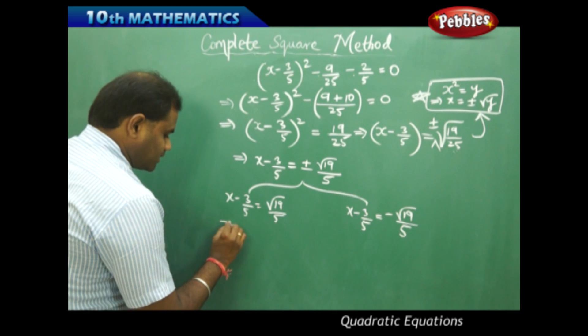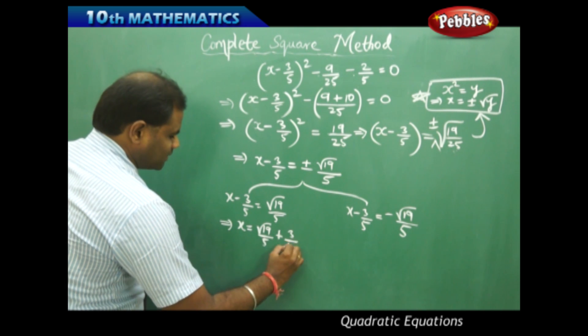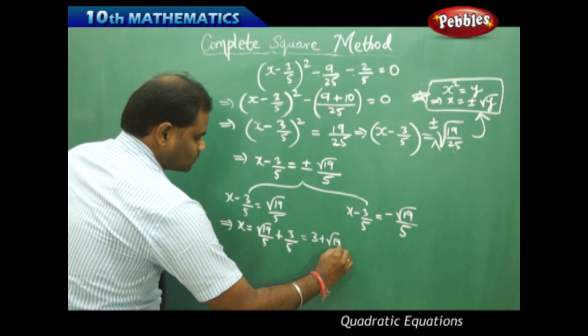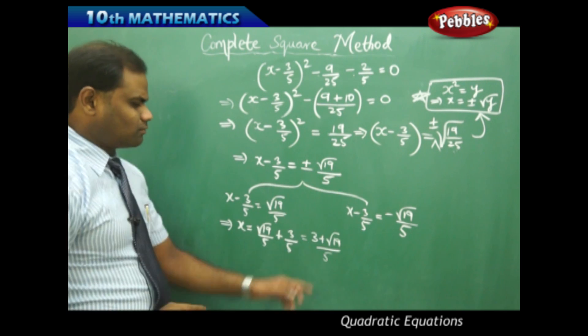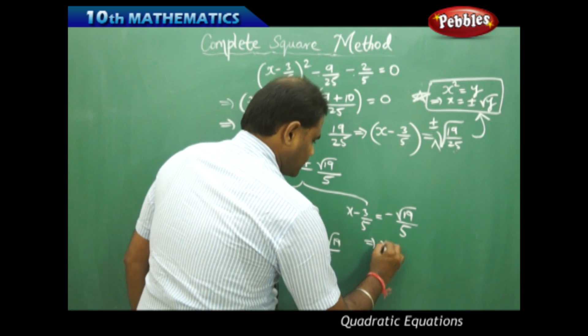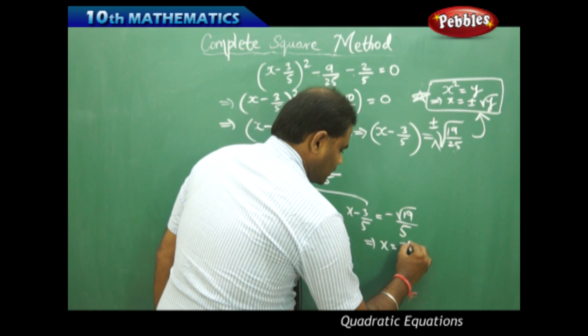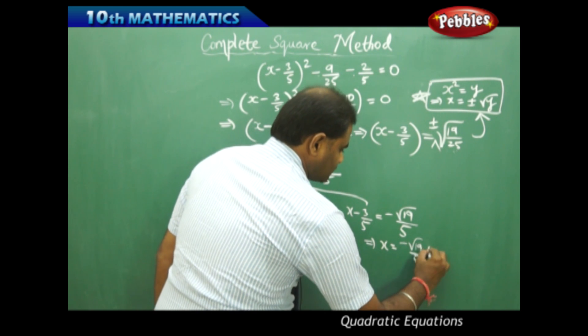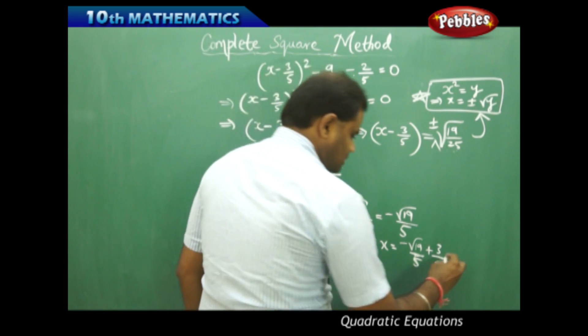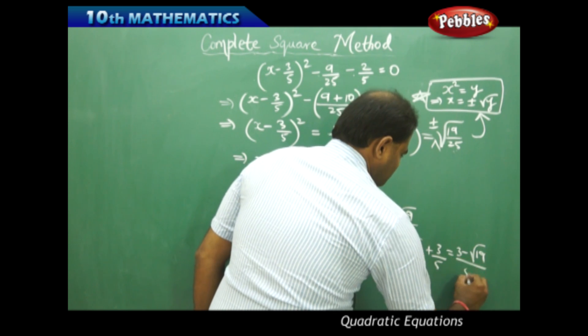Now in this case x would be √19/5 plus 3/5 which comes out to be (3 + √19)/5, and x = -√19/5 + 3/5 which on LCM gives me the final answer as (3 - √19)/5.